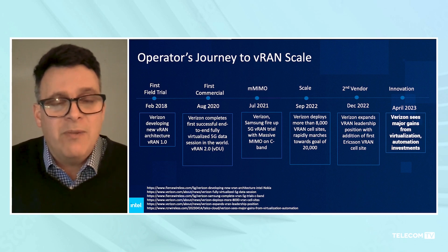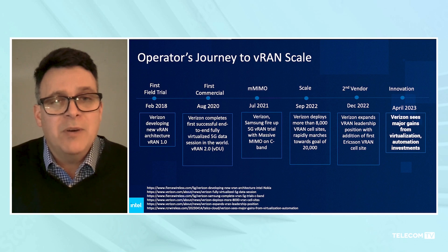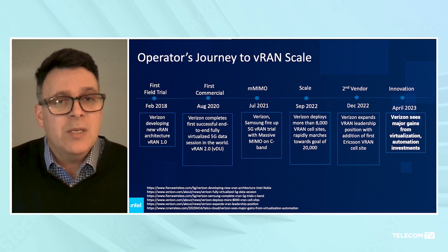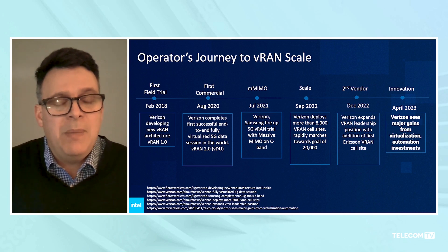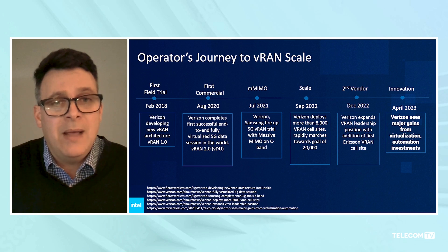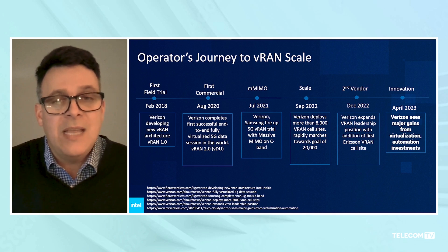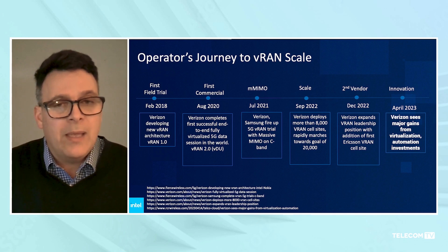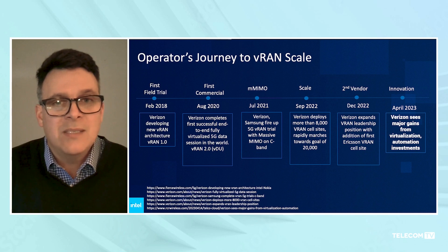After meeting KPIs and figuring out how to deploy the first system, the focus went to scale. Verizon spent about two years scaling from hundreds of sites to 1,000 sites, investing in people, processes, and tools. Once they got to 1,000 sites, going from 1,000 to 10,000 was relatively quick — they took about eight months to get to 10,000 sites, but maybe three years to get their first 1,000. This was basically because they invested in people, processes, and tools to scale.